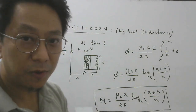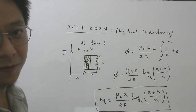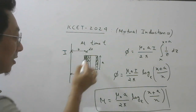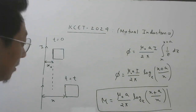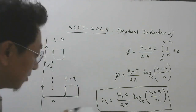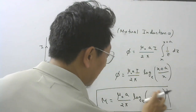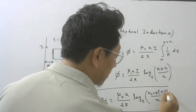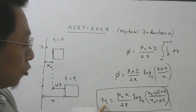Now we need to bring time in, because the graph is M versus time, not M versus X. The main issue with the question is they have not mentioned where the loop was at time 0. In the general case, assume the loop was at distance X₀ at t = 0. Since the loop moves at constant speed V, we have X = X₀ + Vt. Substituting: M = μ₀A / 2π · ln[(X₀ + Vt + A) / (X₀ + Vt)].